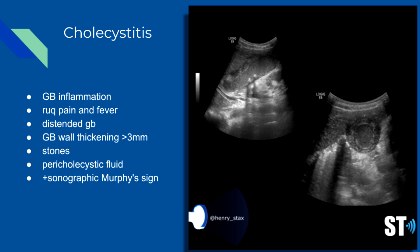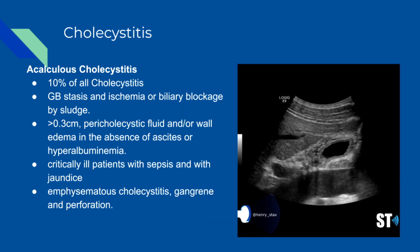There are a few types of cholecystitis. Acalculous cholecystitis represents 10% of all cases, thought to be caused by gallbladder stasis, ischemia, or biliary blockage by sludge. The gallbladder is typically distended with wall thickening greater than 3 millimeters, pericholecystic fluid, and wall edema. It usually presents in critically ill patients with sepsis and jaundice without a clear cause. Complications are similar to calculous cholecystitis, including emphysematous cholecystitis, gangrene, and perforation.